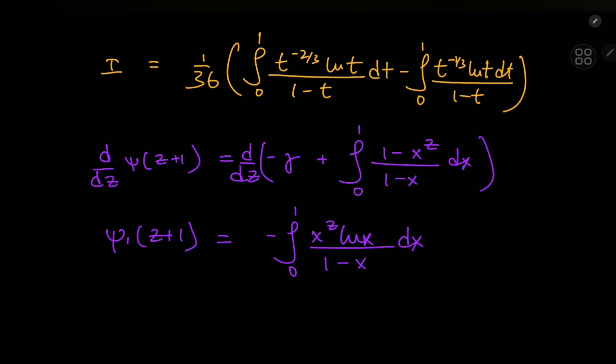So we see for the first integral, all we need is z equal to negative 2 thirds. And here we need z equal to negative 1 third. And this implies that i equals 1 by 36 times negative trigamma z equal to 2 thirds. So negative 2 thirds plus 1 is just 1 third.